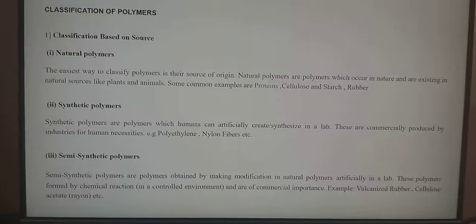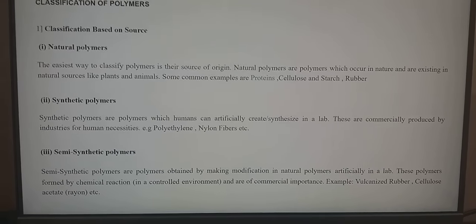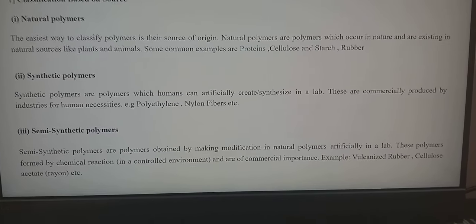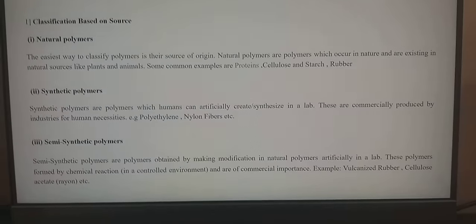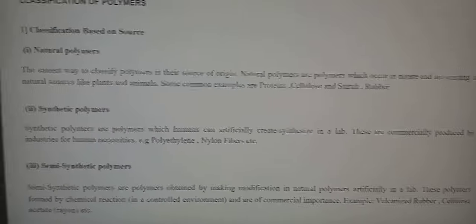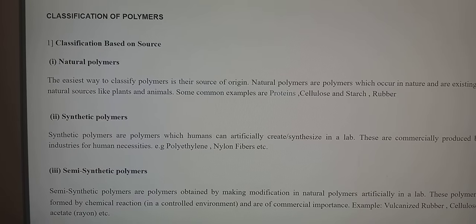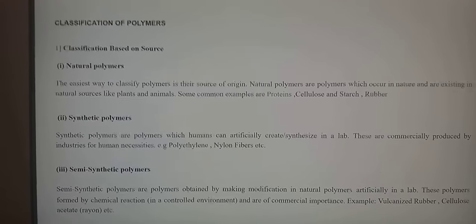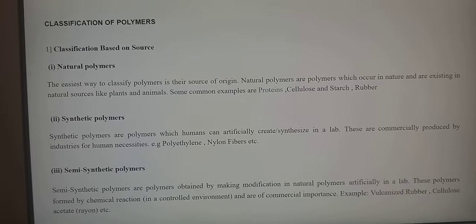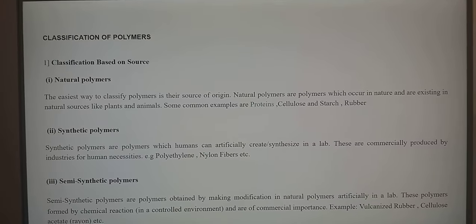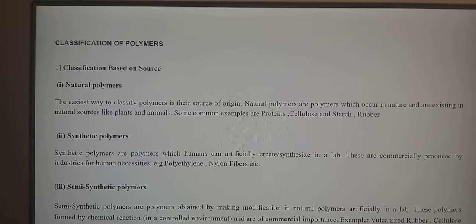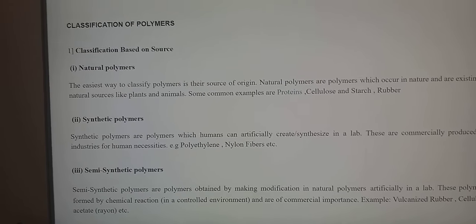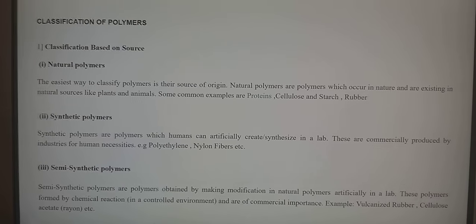Now looking at the classification of polymers, they are divided in various ways. The first classification is based on the source. On the basis of source, polymers are divided into three types: natural polymers, synthetic polymers, and semi-synthetic polymers. Natural polymers are those which occur in nature, existing in natural resources like plants and animals. Examples include proteins, cellulose, starch, rubber, etc.